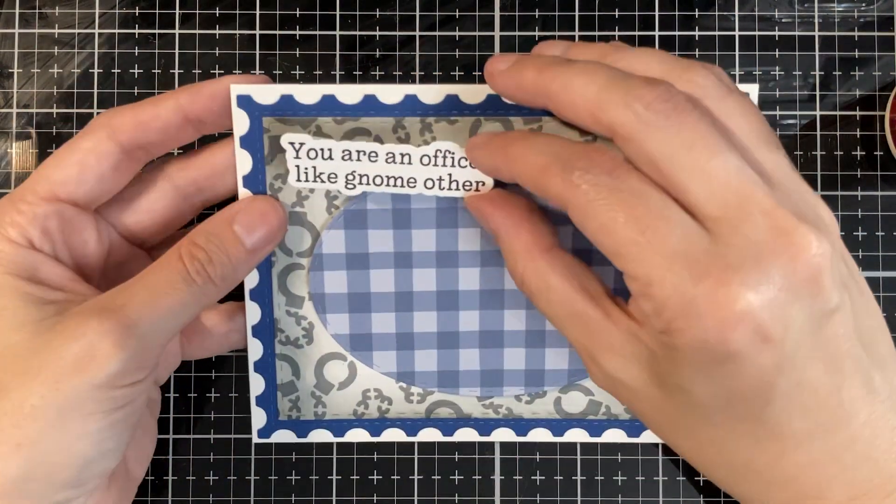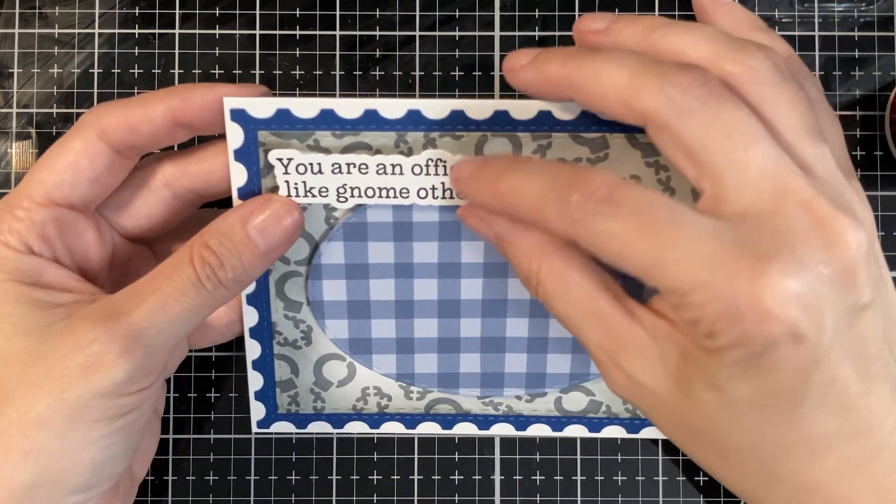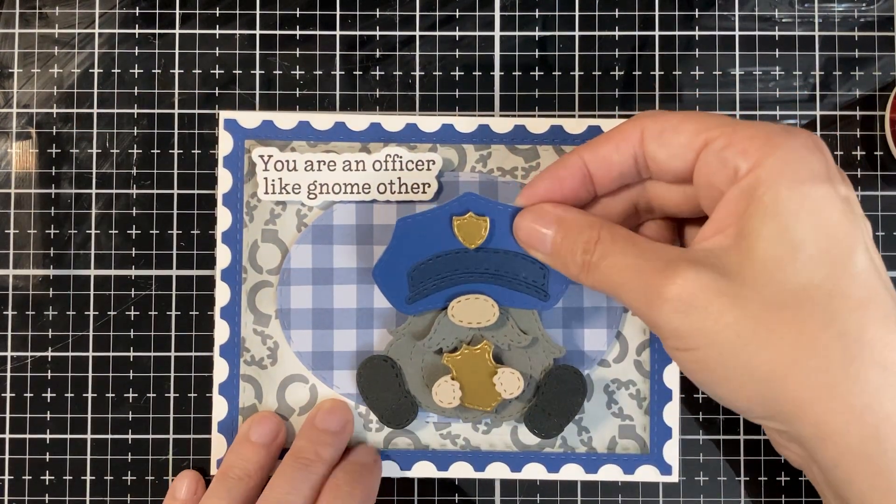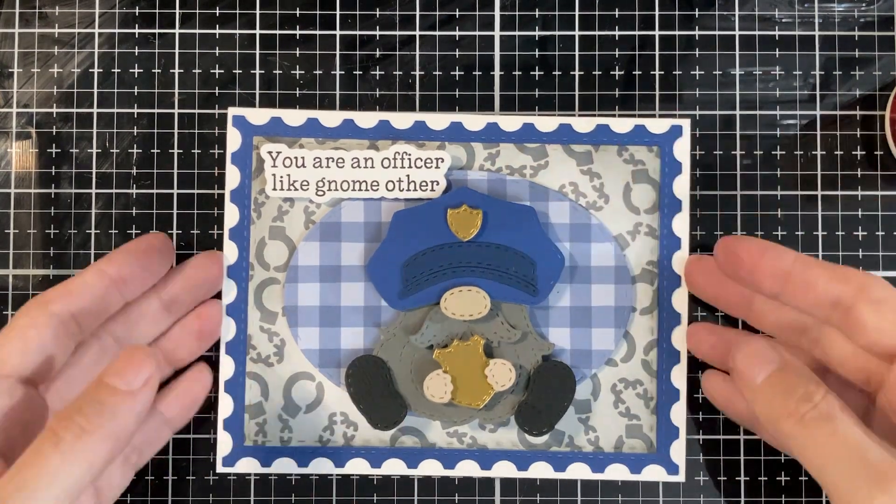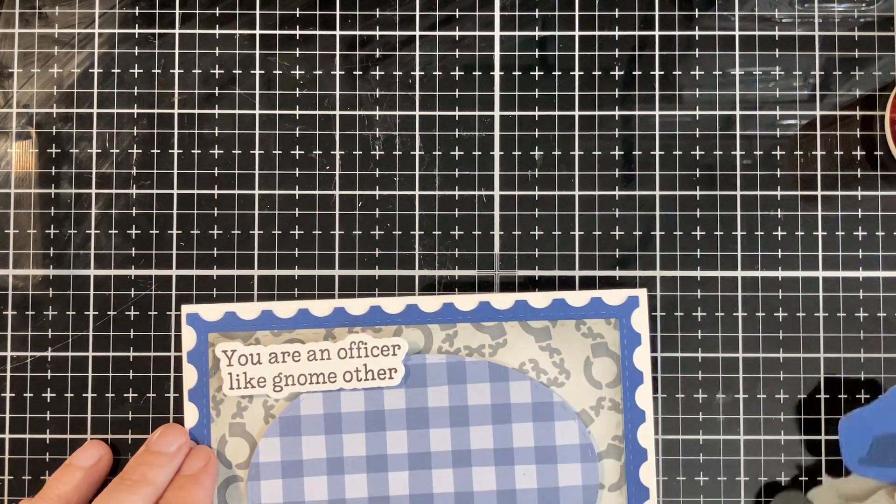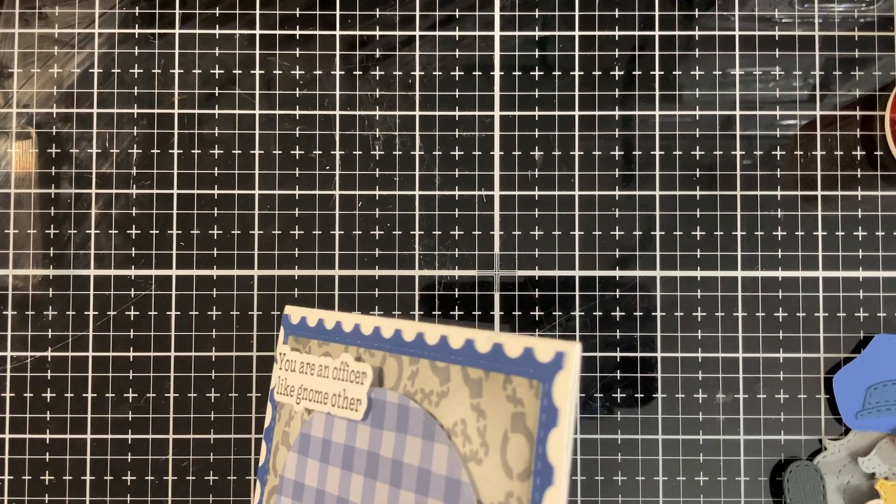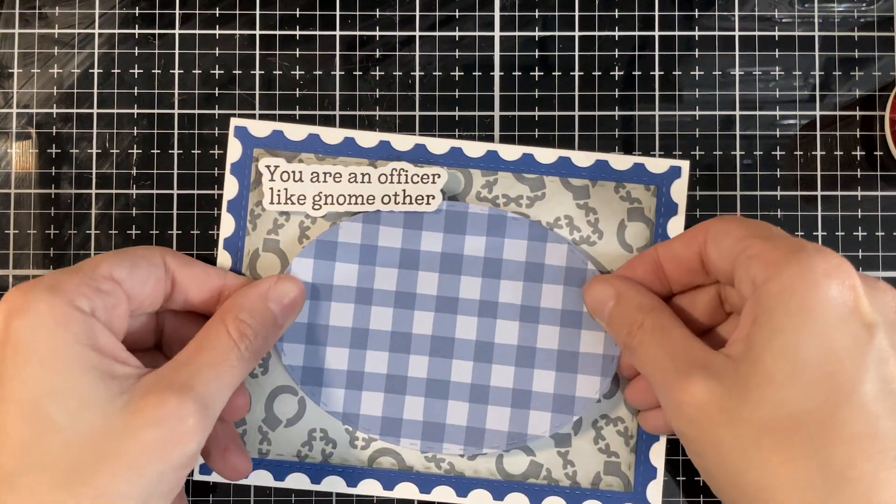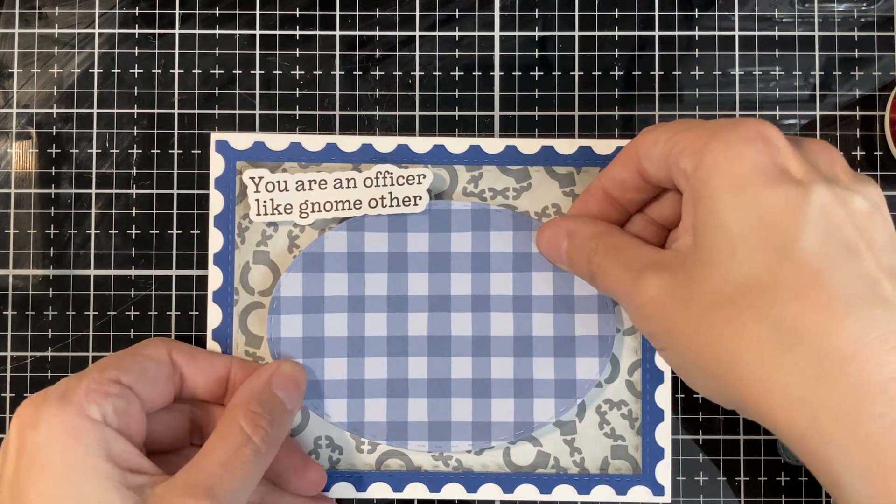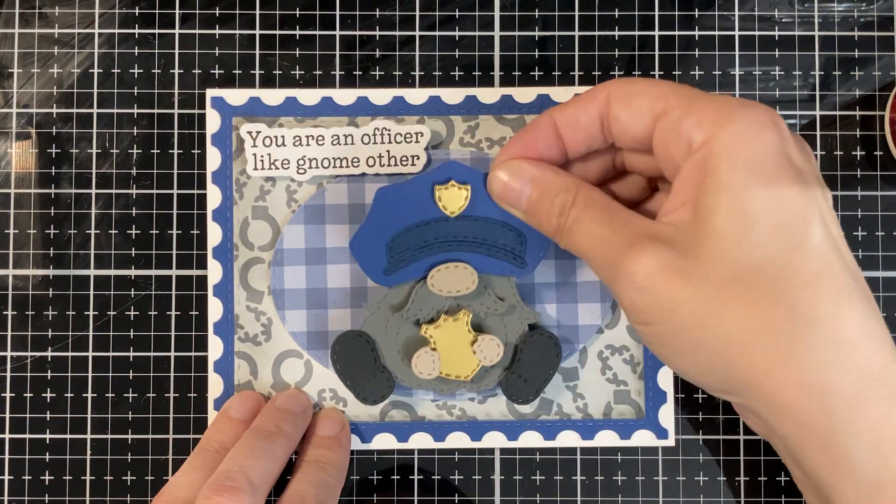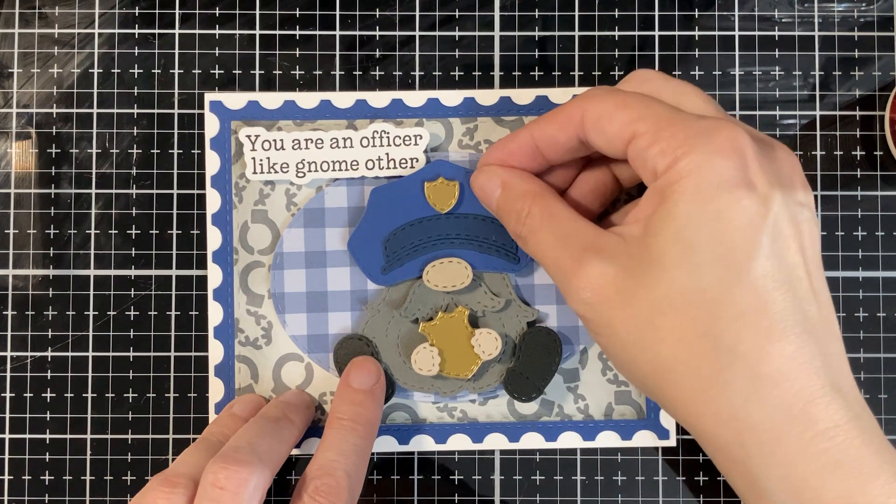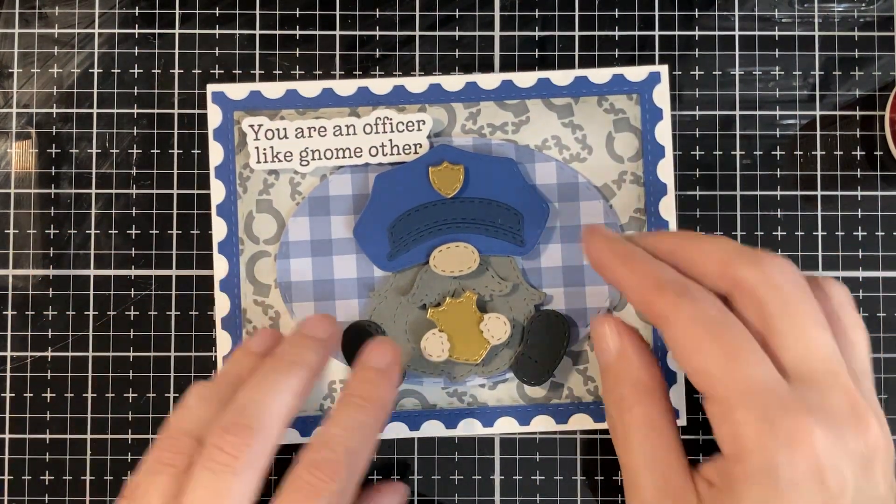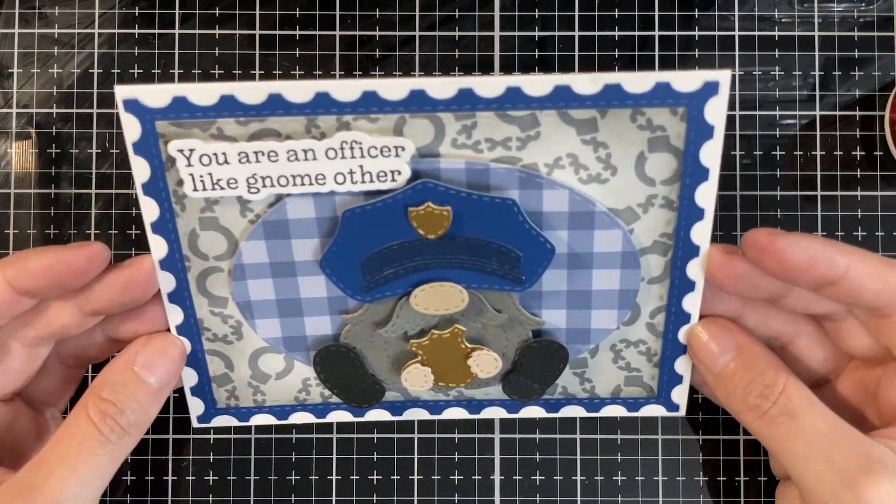I decide to take my little cop off. I should have just kept it on that oval and just brought the whole thing down because I'll be bringing that piece down also. You are an officer like gnome other. I'm going to peel that, bring it down slightly here. Put my little cop back on. Now it works much better. Cute.